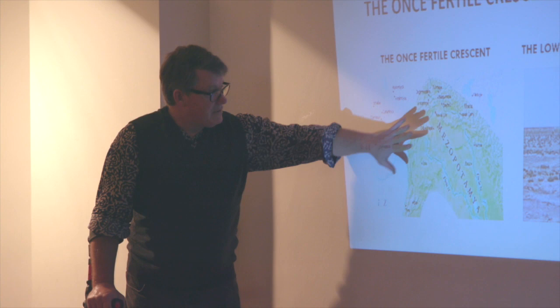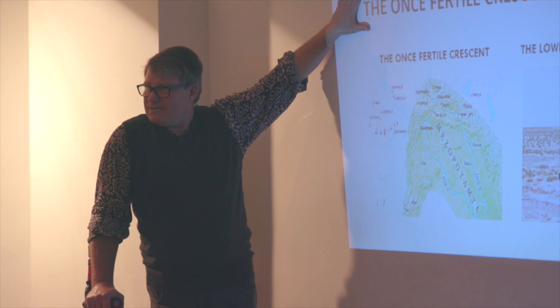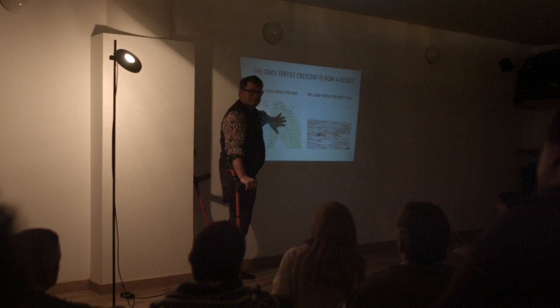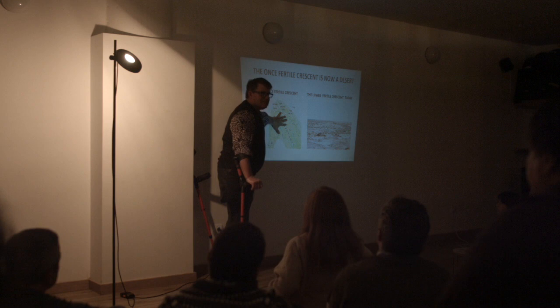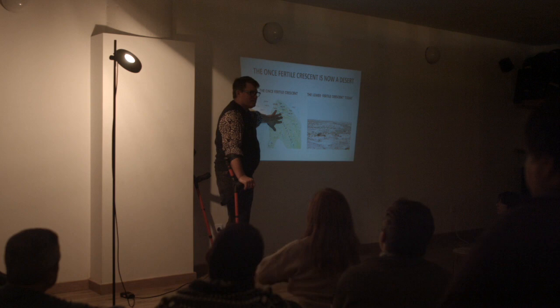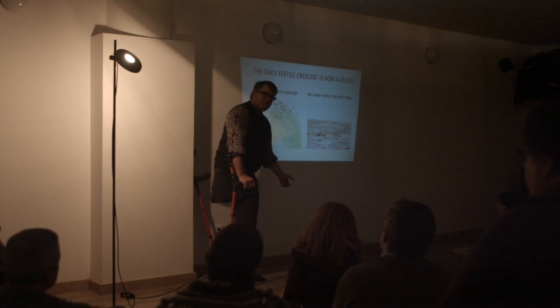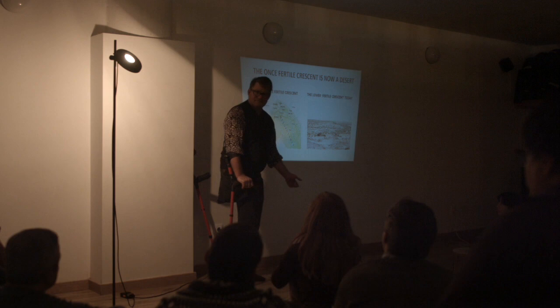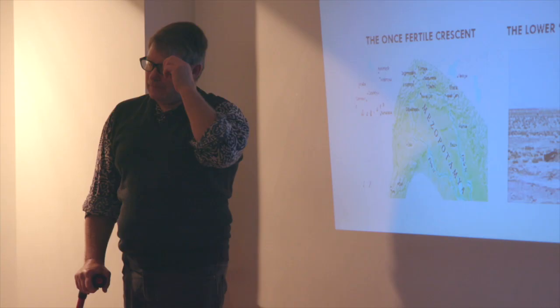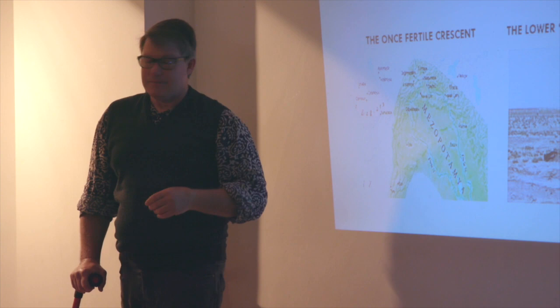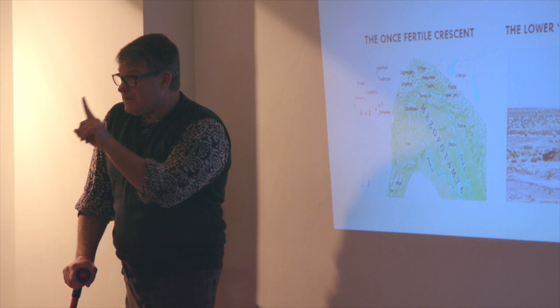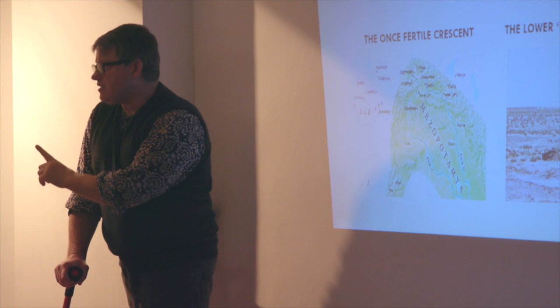Does this area here - the fertile crescent - Mesopotamia, Syria, Lebanon, Iraq - was once known as the fertile crescent. That's what it looks like now. There are farms there at the moment. Do you know where they're getting their water from? The aquifer - those aquifers that take centuries to fill.